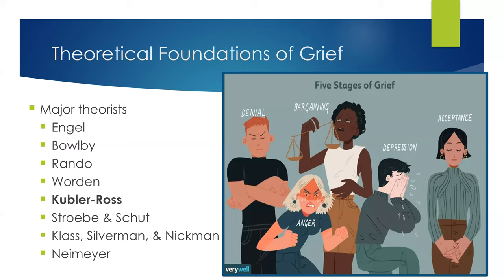Stage two is anger, which can be very subtle or very obvious — it's a 'why me' type of feeling. Stage three is bargaining, where people bargain with a higher power: 'I swear if you just bring him back, I will never drink again.' Stage four is depression — the person is withdrawn and sad. This is not clinical depression, but a normal response to loss or impending loss. Stage five is acceptance — coming to terms with the death and no longer fighting it.